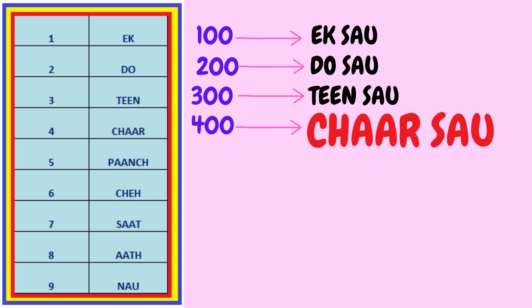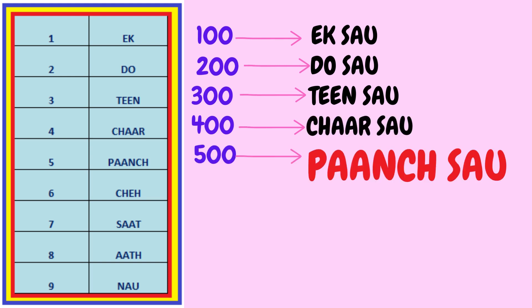Similarly, the Hindi equivalent of 4 is 'chaar', and 100 is 'saw', so 400 becomes 'chaar saw'. Similarly, 5 is known as 'paach' in Hindi and 100 is known as 'saw', so 500 becomes 'paach saw'.